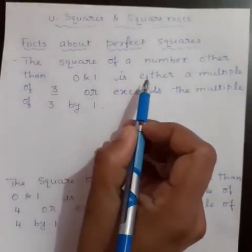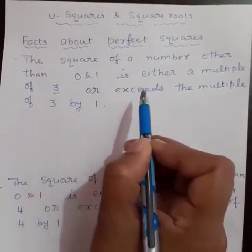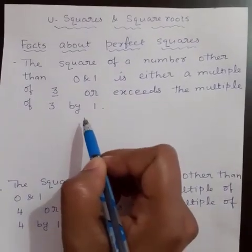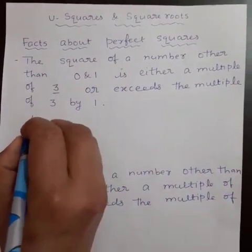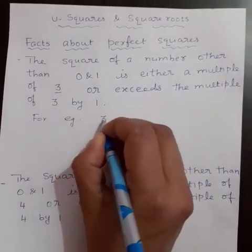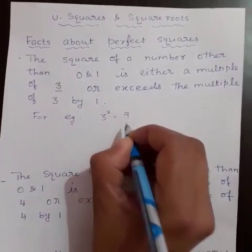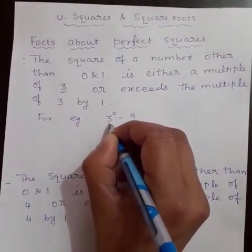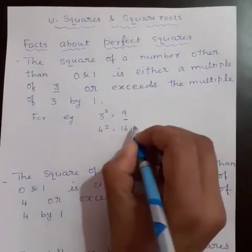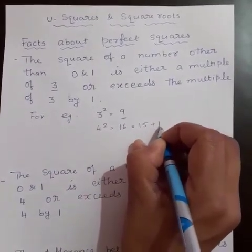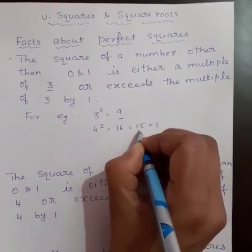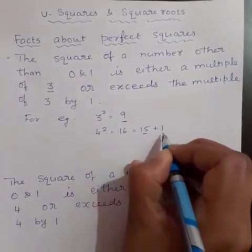The square of a number other than 0 and 1 is either a multiple of 3 or exceeds the multiple of 3 by 1. For example, 3 square is equal to 9. We know that 9 is the multiple of 3. 4 square is equal to 16. 16 is equal to 15 plus 1. That is, 16 exceeds the multiple of 3, that is 15, by 1.